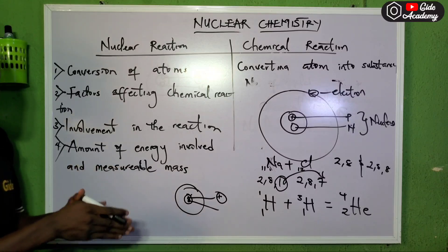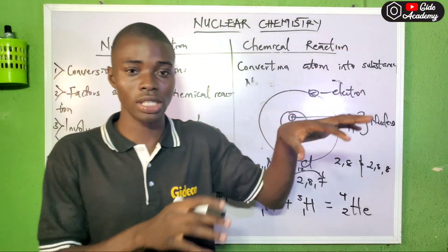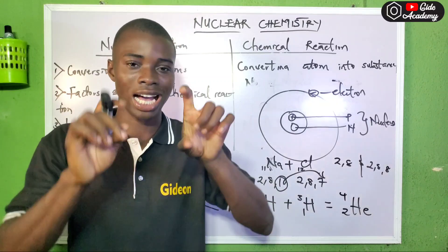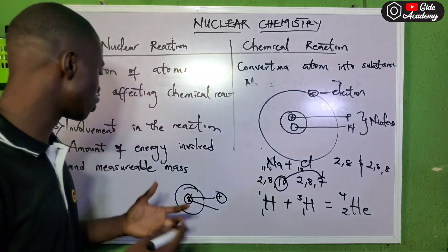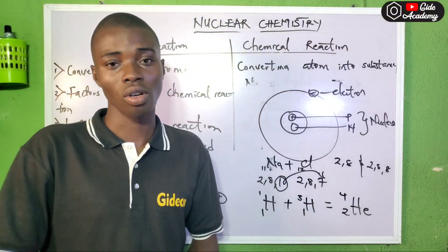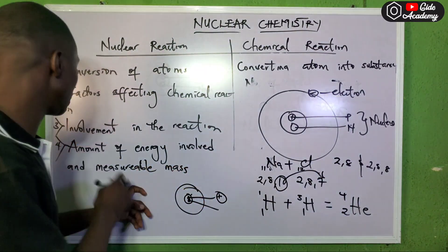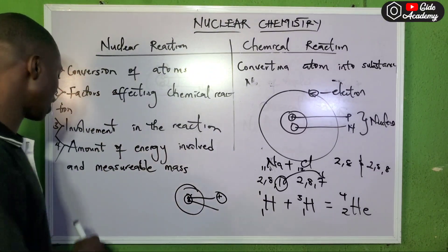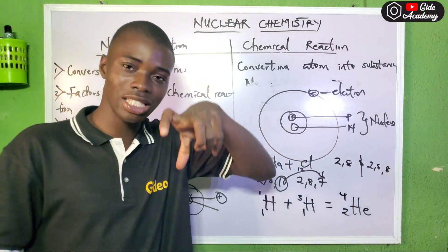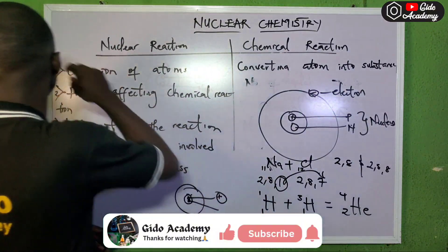The last difference is the amount of energy involved. In a chemical reaction, the amount of energy is usually not easily measurable, and the mass change is also not measurable. For example, in titration, we cannot precisely measure the energy involved or the mass change. But in a nuclear reaction, energy is usually involved and that energy is measurable, and the mass change is also measurable.